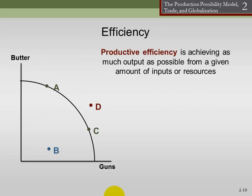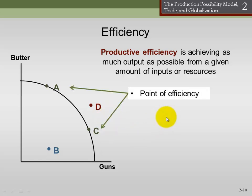Efficiency: we are productively efficient if we use our resources to produce as much as we possibly can. Let's look at four different points. Points A and C are on the production possibilities curve. If I'm producing at point A, given my level of butter production, can I produce any more guns? No — I'm producing the most guns I can given the butter I'm producing, and also the most butter I can given the guns. That's efficient. At point C, I'm producing as much guns and butter as I possibly can given that combination — the only way I can produce more butter is by producing fewer guns, and vice versa. Both A and C are efficient.